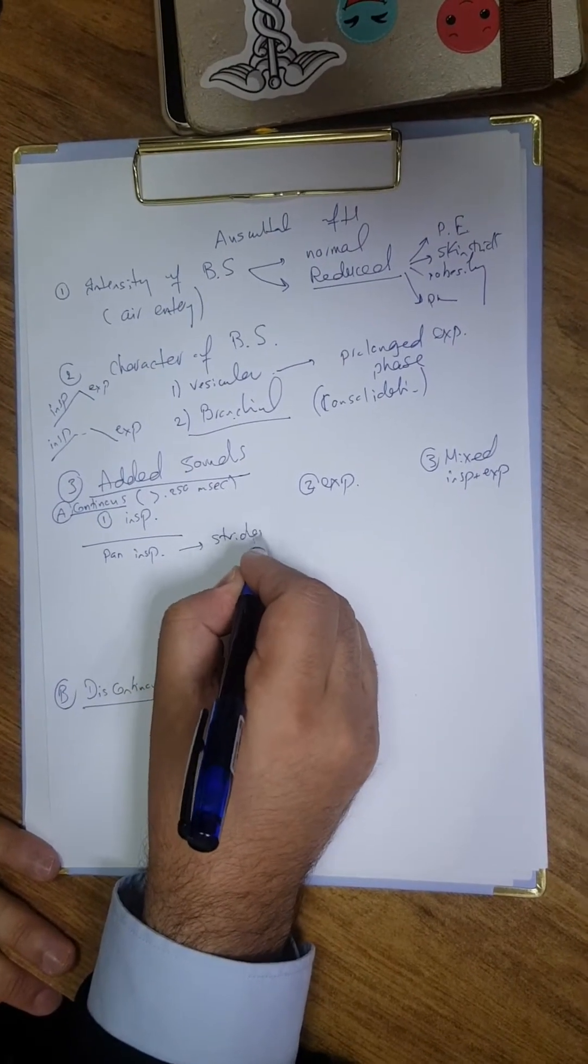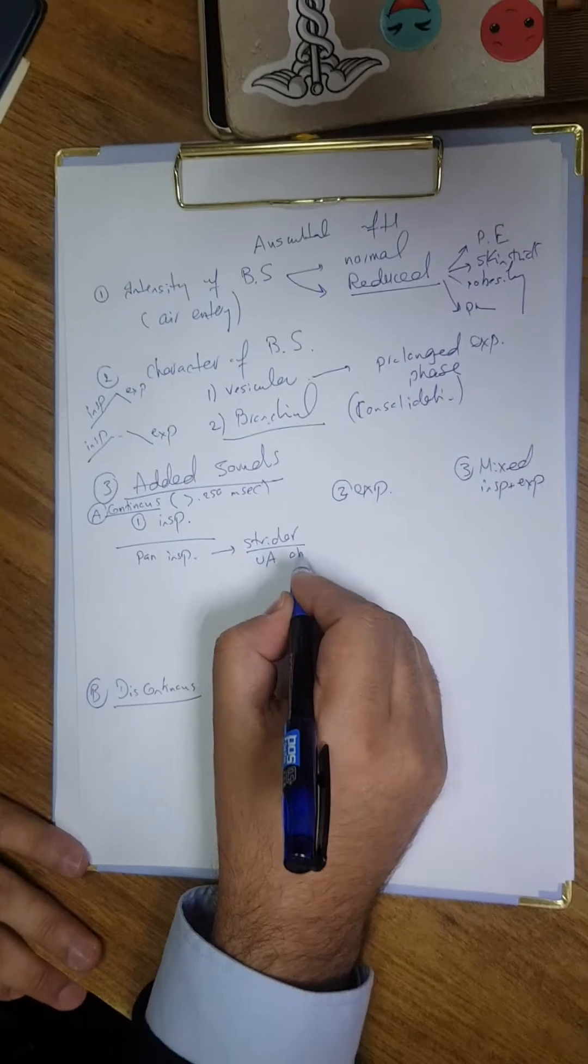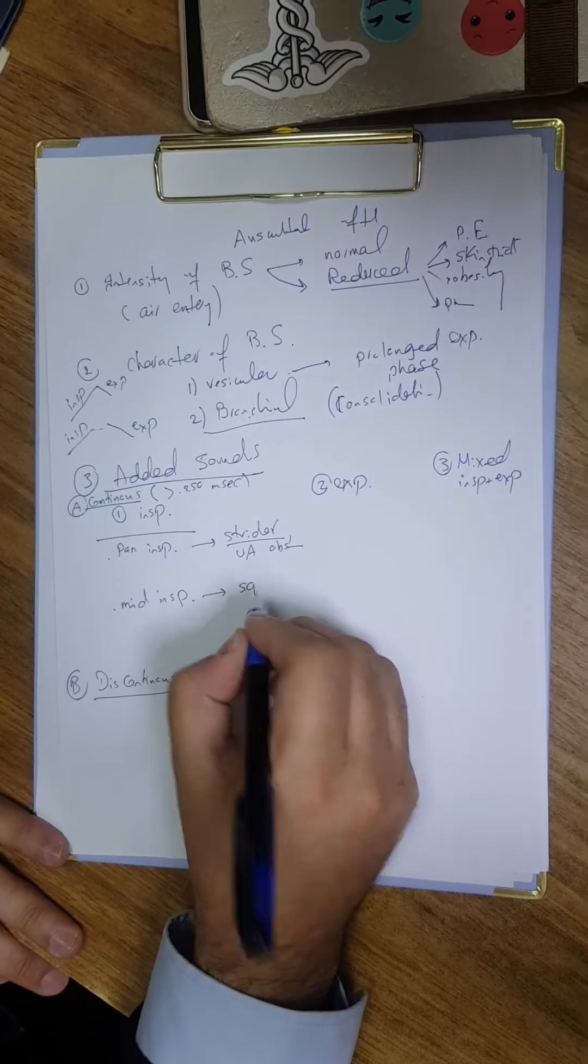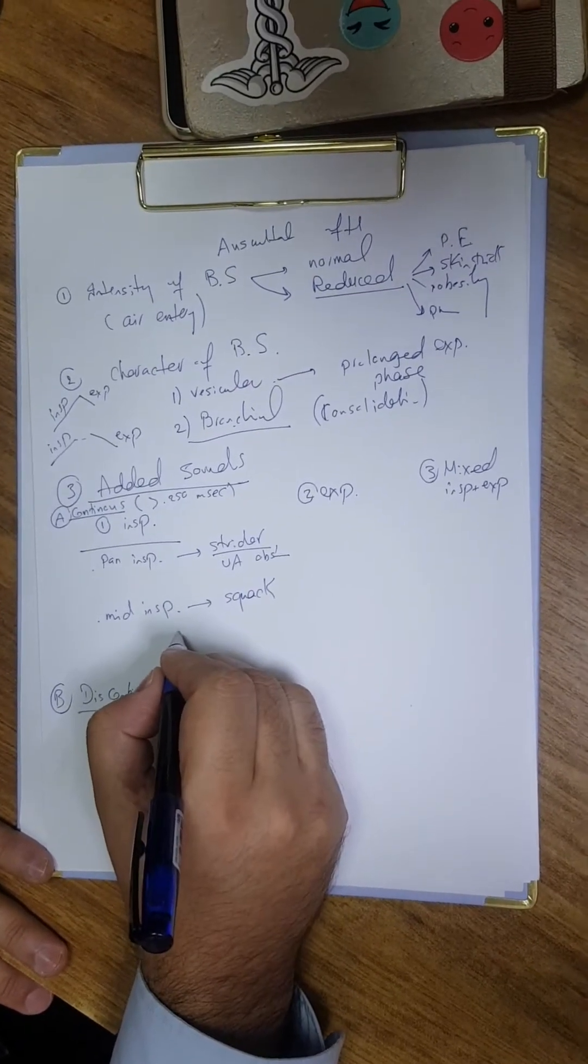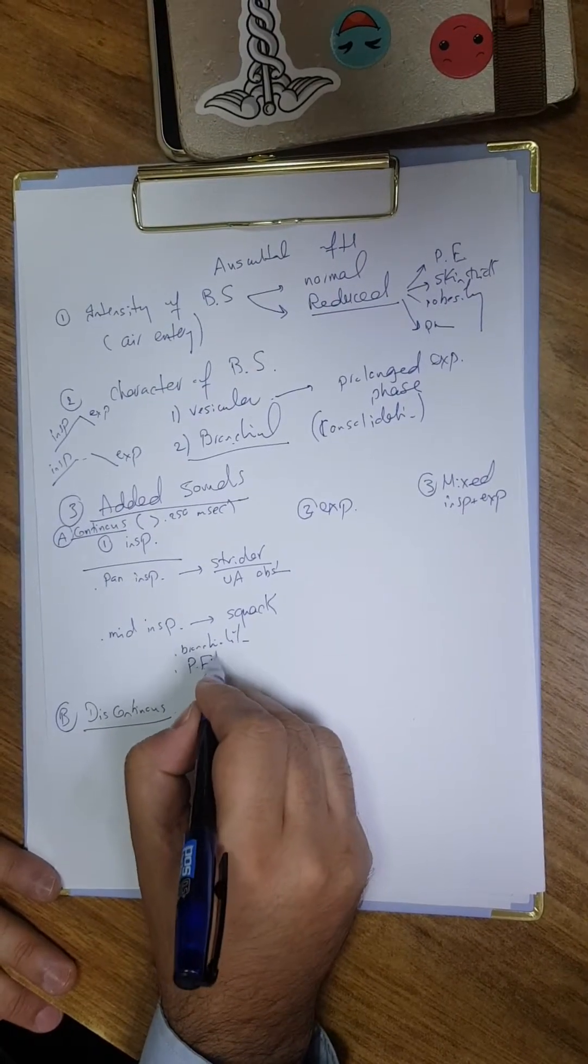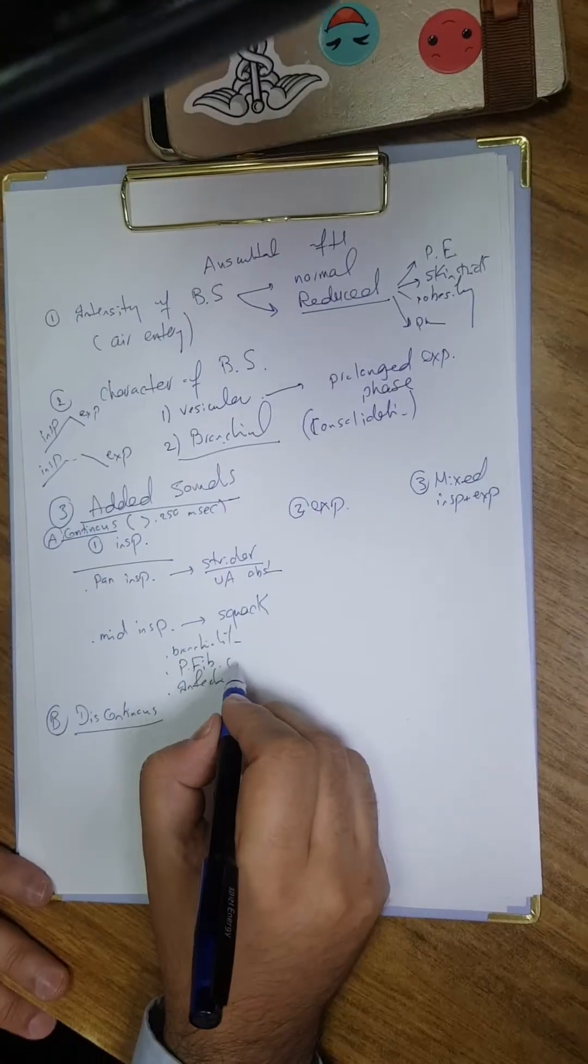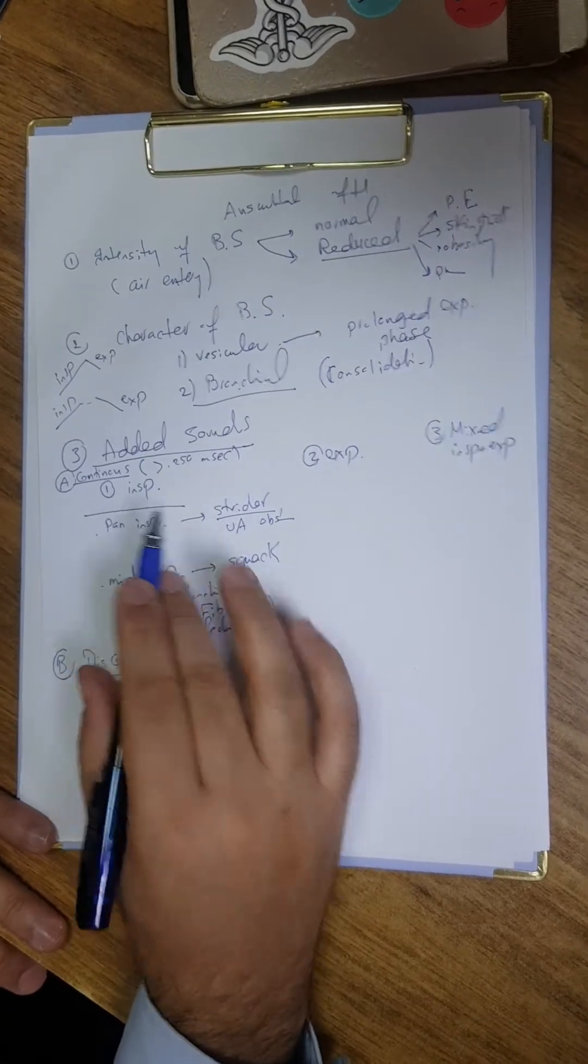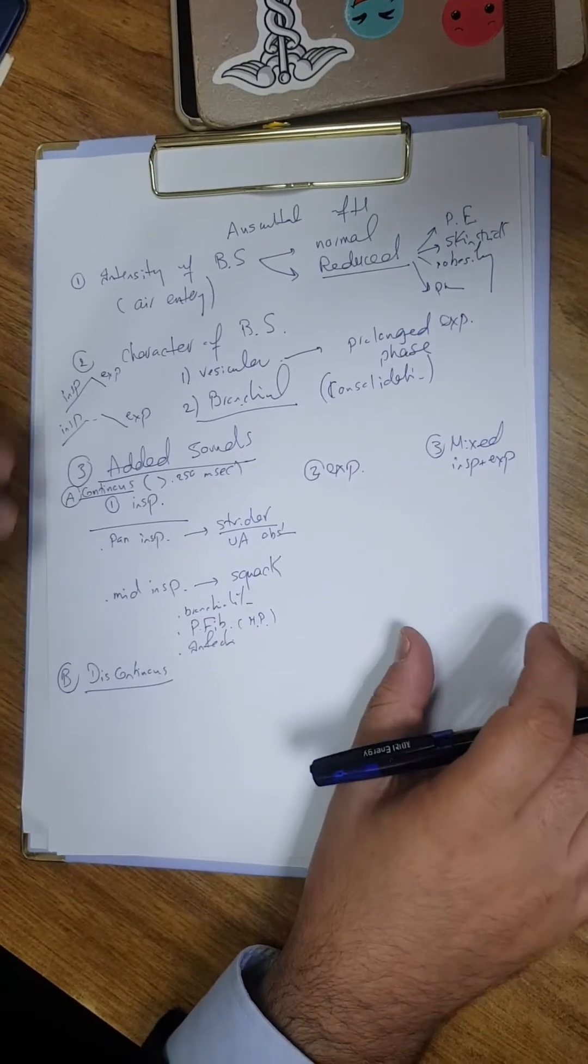Stridor indicates upper airway obstruction. Mid-inspiratory sounds we call squawk or squeak, which indicates bronchiolitis. It can occur with pulmonary fibrosis, infections, particularly hypersensitivity pneumonitis. This is the mid-inspiratory sound, versus pan-inspiratory all over the inspiration.